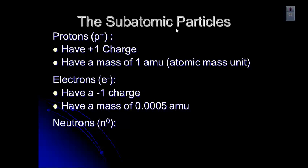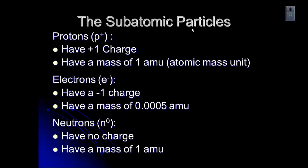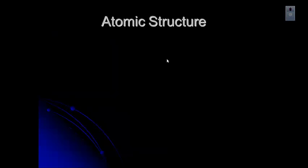Neutrons are abbreviated N0 because they have no charge. They're neutral, and they have a mass of 1 amu. Hopefully you guys can remember from back in your earlier science classes that protons and neutrons are in the nucleus, and electrons are around outside the nucleus.